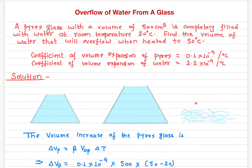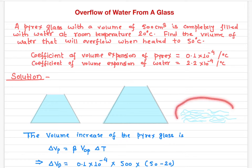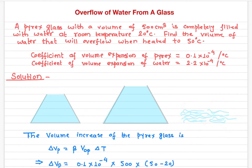When you heat it to 50 degrees Celsius, some of the water overflows — you can see this is the overflow water. Now you need to find out what the volume of this overflow water is. The given quantities are the coefficient of expansion of the Pyrex glass and the coefficient of expansion of water.